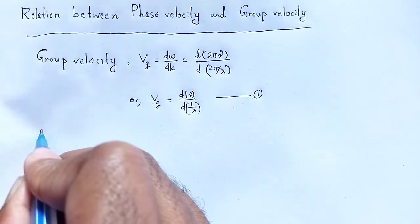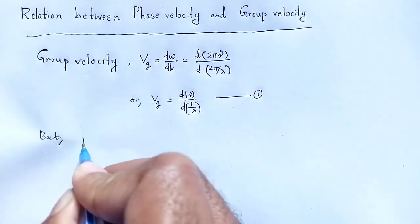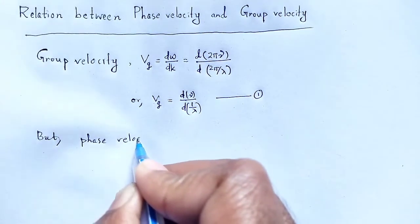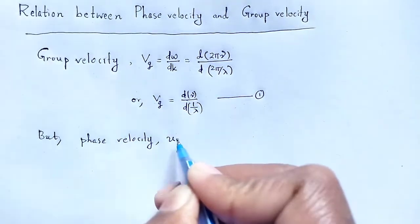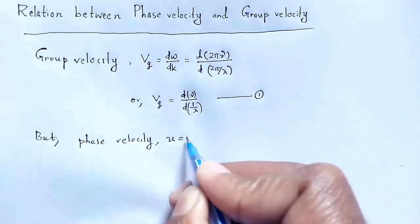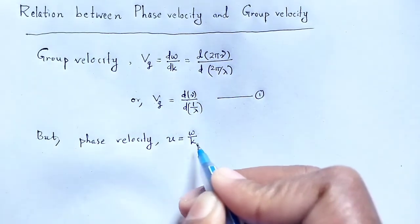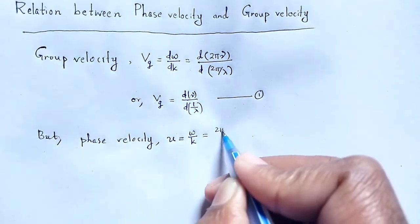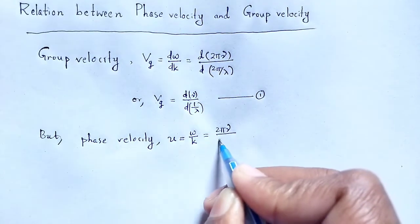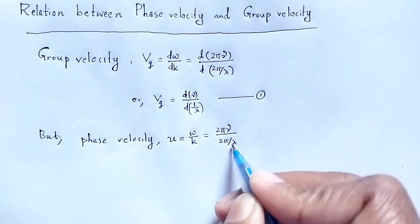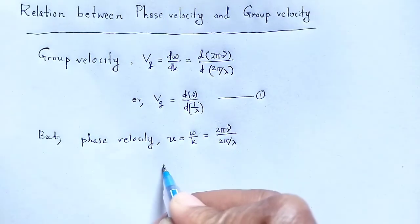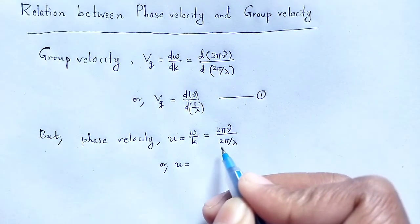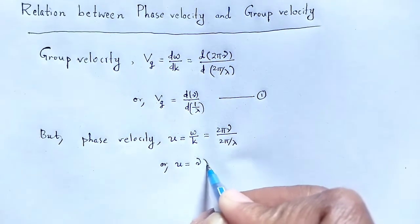Now for phase velocity u, phase velocity is equal to ω/k. Substituting ω = 2πν and k = 2π/λ, the 2π terms cancel out, giving us u equal to νλ.